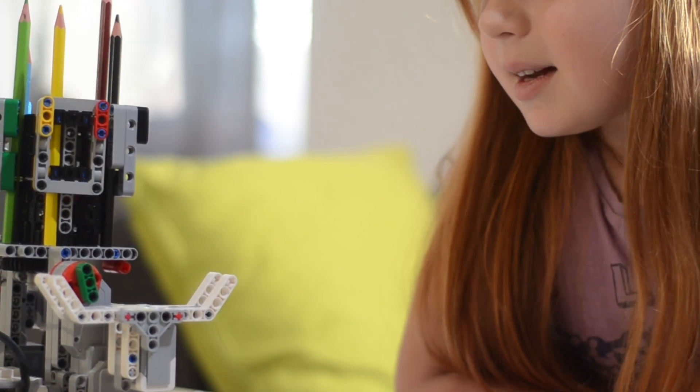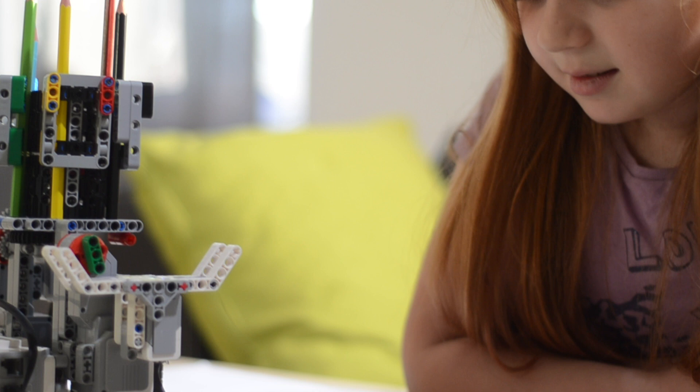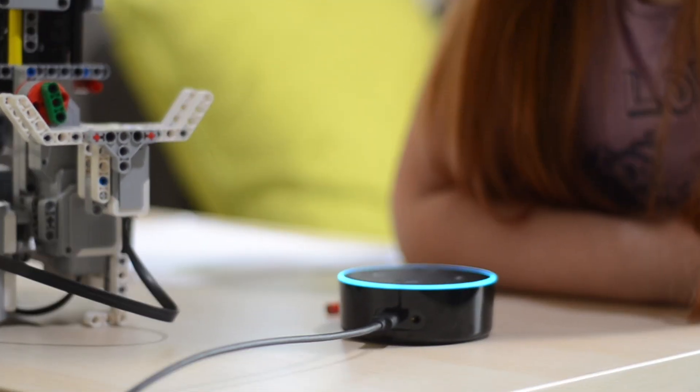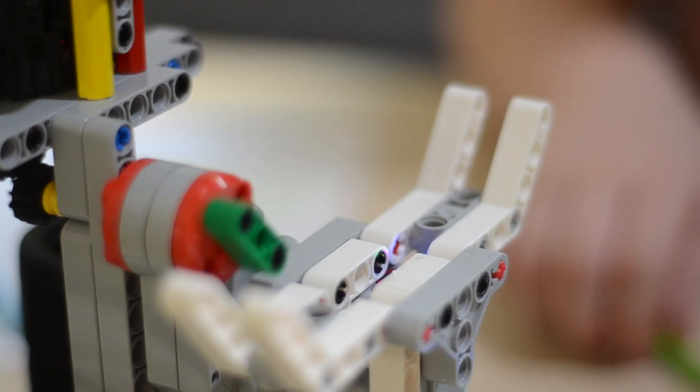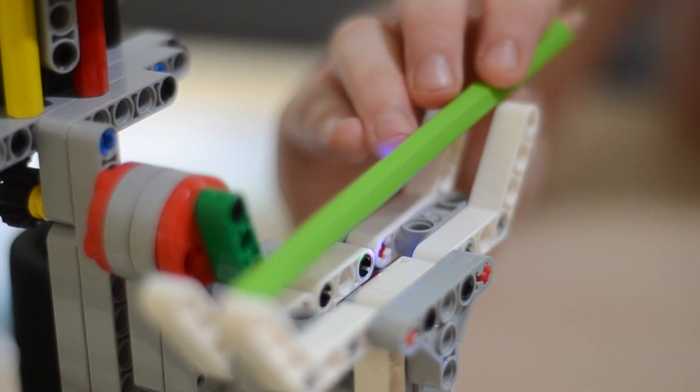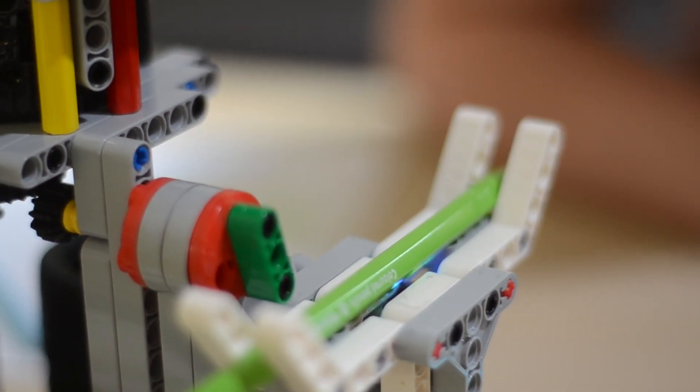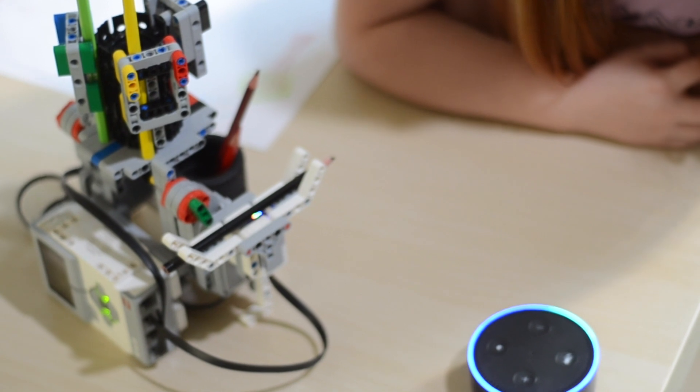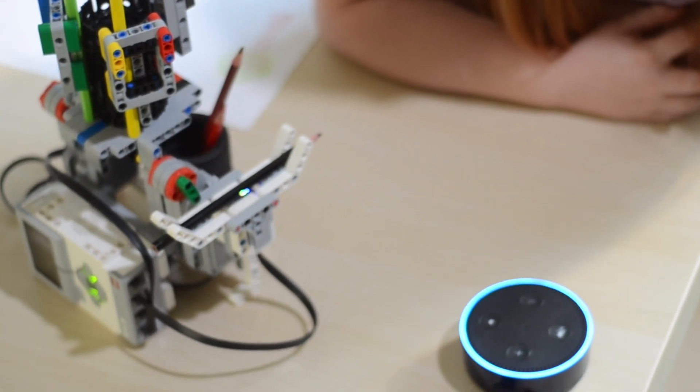Alexa, what color is grass? Grass color is green. What color? Command color activated.